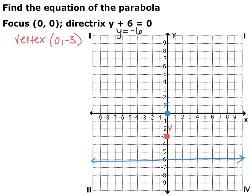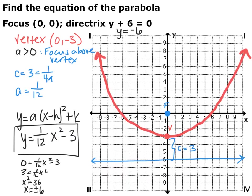Go ahead and pause the video to find the equation of the parabola. The distance between the vertex and the focus, or the vertex and the directrix, is 3 — so c equals 3, where c equals 1 over 4a. So a equals 1/12, and it's positive because the focus is above the vertex, meaning the parabola opens up. Plugging everything in: y equals 1/12 times (x minus 0) squared minus 3, which is y equals 1/12 x squared minus 3. Setting y equals 0 helps figure out where it crosses the x-axis to determine how wide the parabola is.